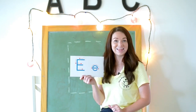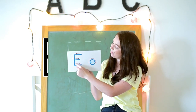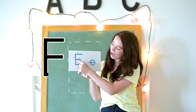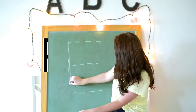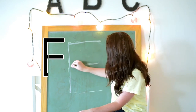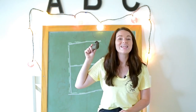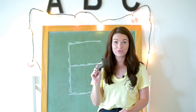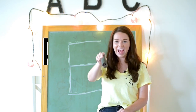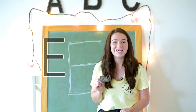Can you do it with me? Let's do it in a squeaky elf voice: down, across, across, across E. Very good. Let's trace it on our chalkboard: down, across, across, across E. Let's trace the letter E with my elephant trunk: down, across, across, across E.